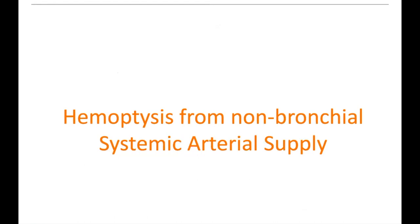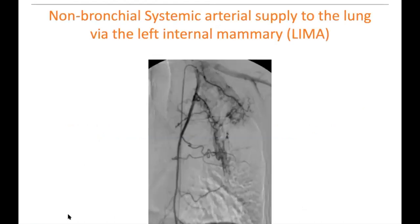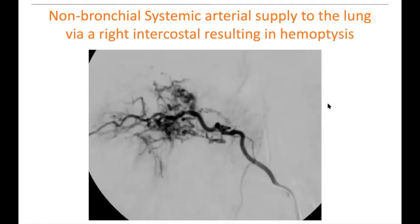There can be non-bronchial systemic arterial supply. For example, here is the left internal mammary artery with bronchial artery supply to the left lung leading to hemoptysis. Here is a right intercostal that has become completely hypertrophied, also resulting in hemoptysis.